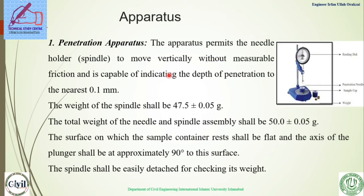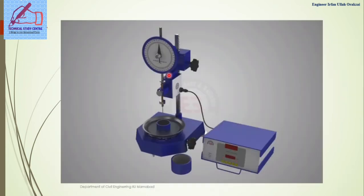The apparatus required for the test: first is the penetration apparatus, also called the penetrometer. The penetrometer permits the needle to move vertically without measurable friction, and it is capable of measuring the depth of penetration to the nearest 0.1 mm. The weight of the spindle should be 47.5 ± 0.05 g, and the total weight of the needle and spindle assembly should be 50 g. The surface of the sample and the needle should be 90 degrees to each other.